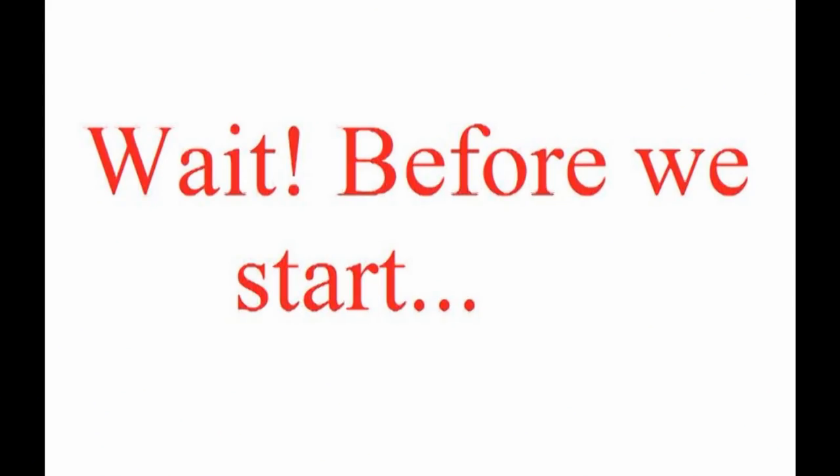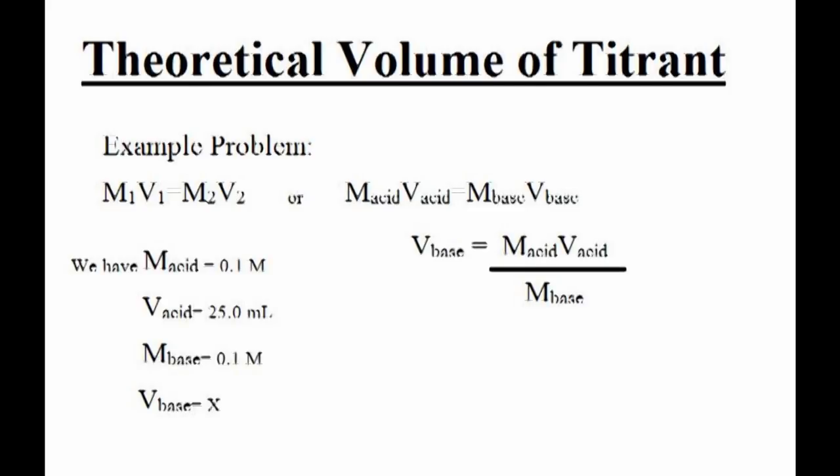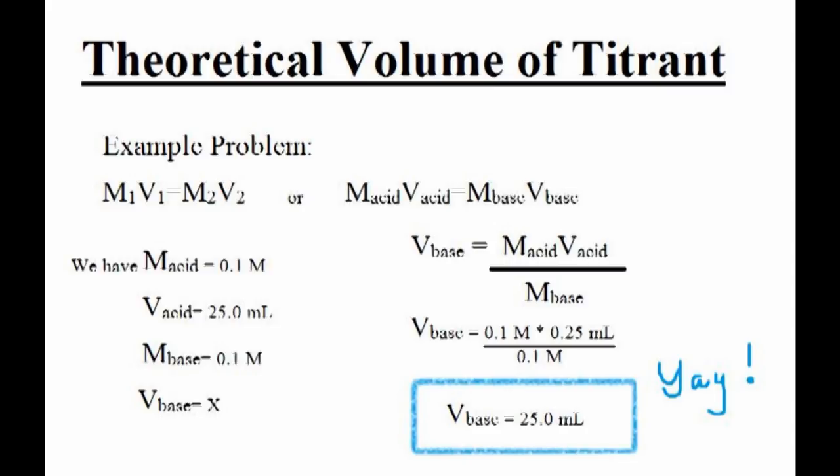Before you start your actual experiment, you want to calculate your theoretical volume of titrant that you need to add to your solution. This way, you can do a quick test run to see how much base you'll need to add for the reaction to reach its equivalence point. Usually, the theoretical volume will be one to two milliliters off from the actual amount you'll be using as titrant in lab.